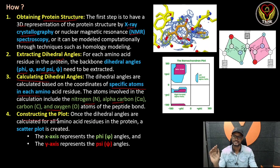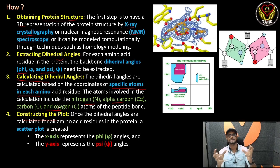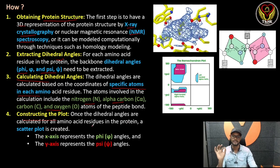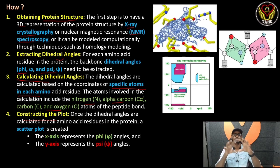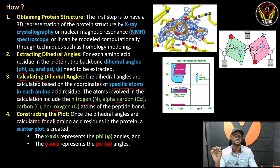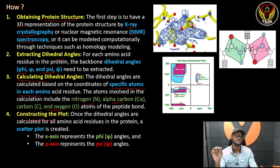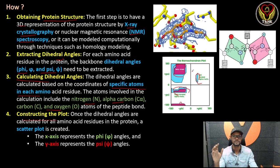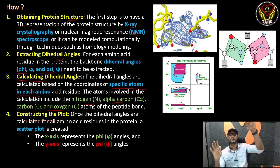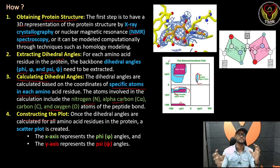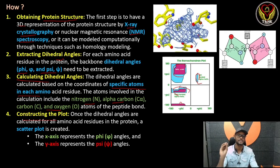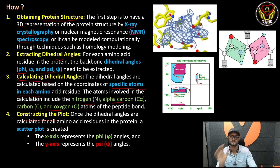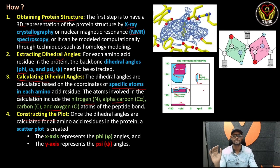We have to calculate the main part. Constructing the plot — once the dihedral angles are calculated for all amino acids in the protein, a scatter plot is generated. Ramachandran's plot is a scatter plot with points distributed across it. We create this scatter plot structure.